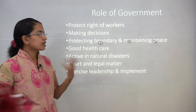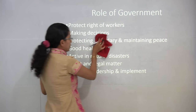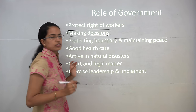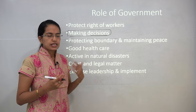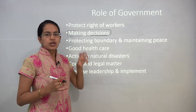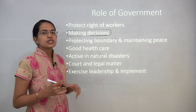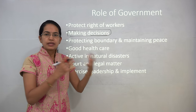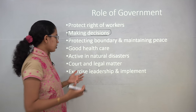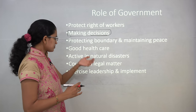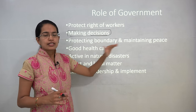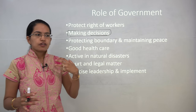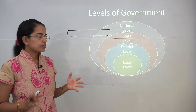When we come to the role of the government, all the things we talked about reflect the basic idea behind decision making. Decision making is one of the most important ideas laid by the government. Again, protecting the rights of workers, protecting the rights of minority groups, and providing good health care. If there is a natural disaster, providing facilities in terms of food and immediate habitation — all those are looked after by government authorities, with other NGOs coming in to help. There are also certain court and legal matters the government looks into. Basically, we can say maintaining law and order, maintaining peace, and creating a kind of leadership and executive system is a basic role of the government.